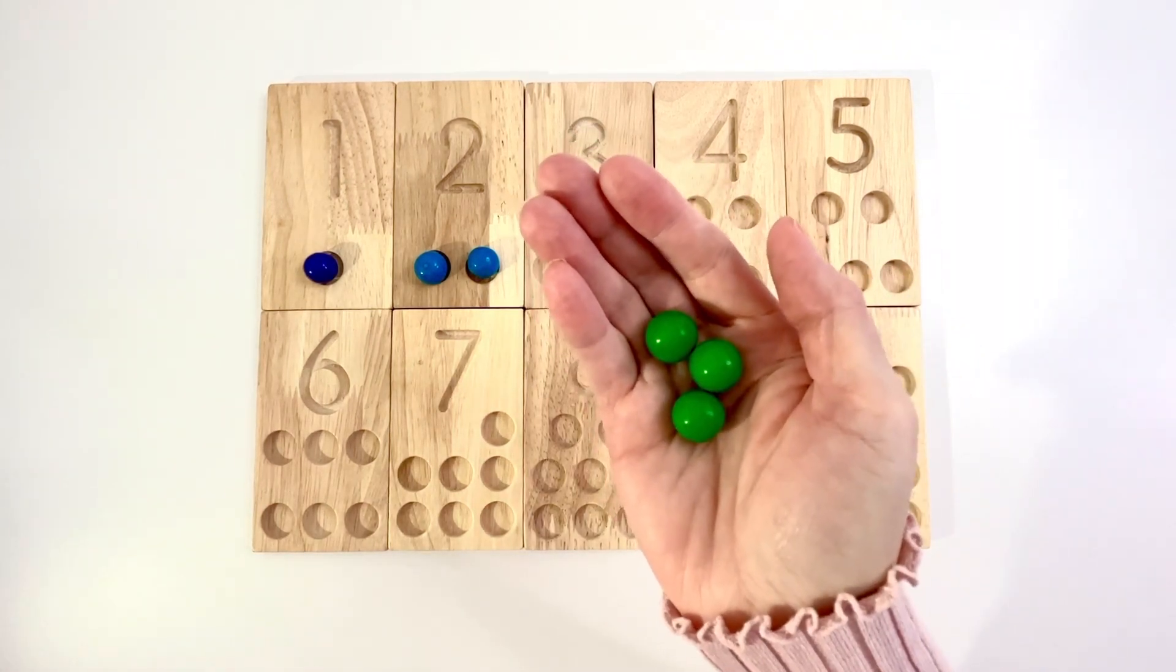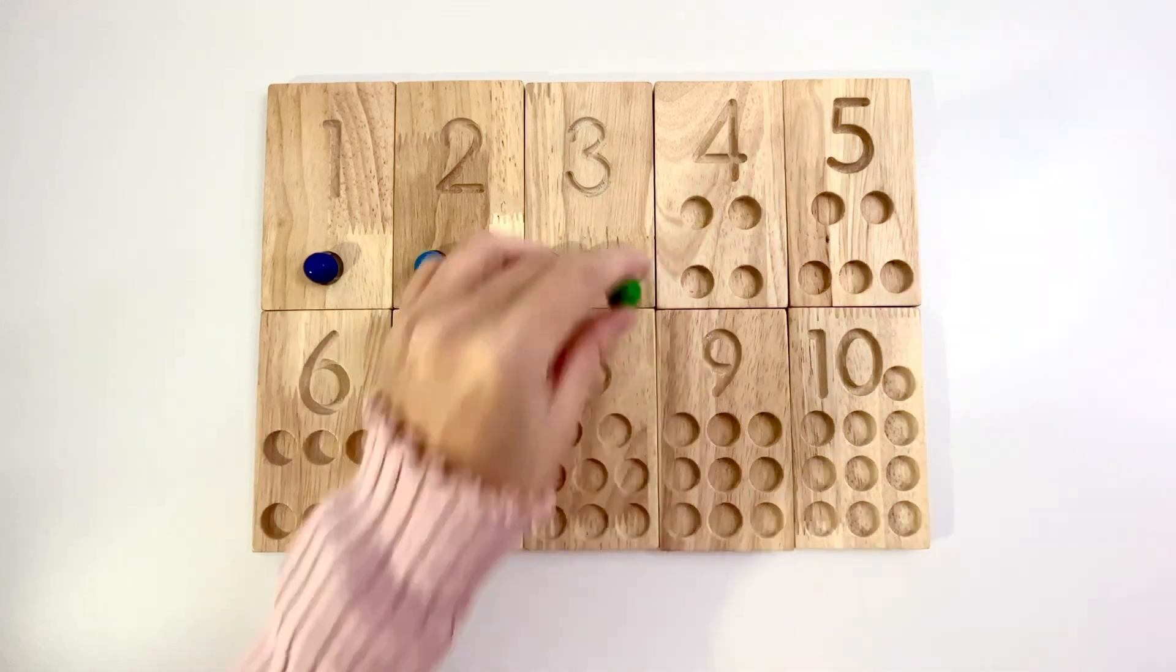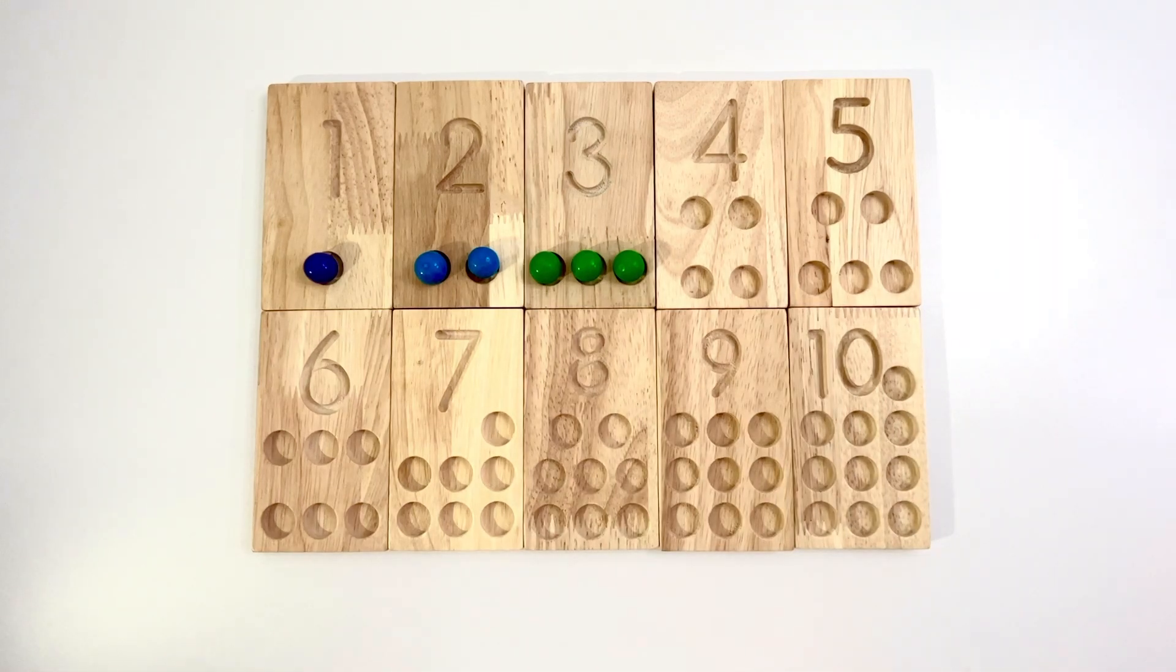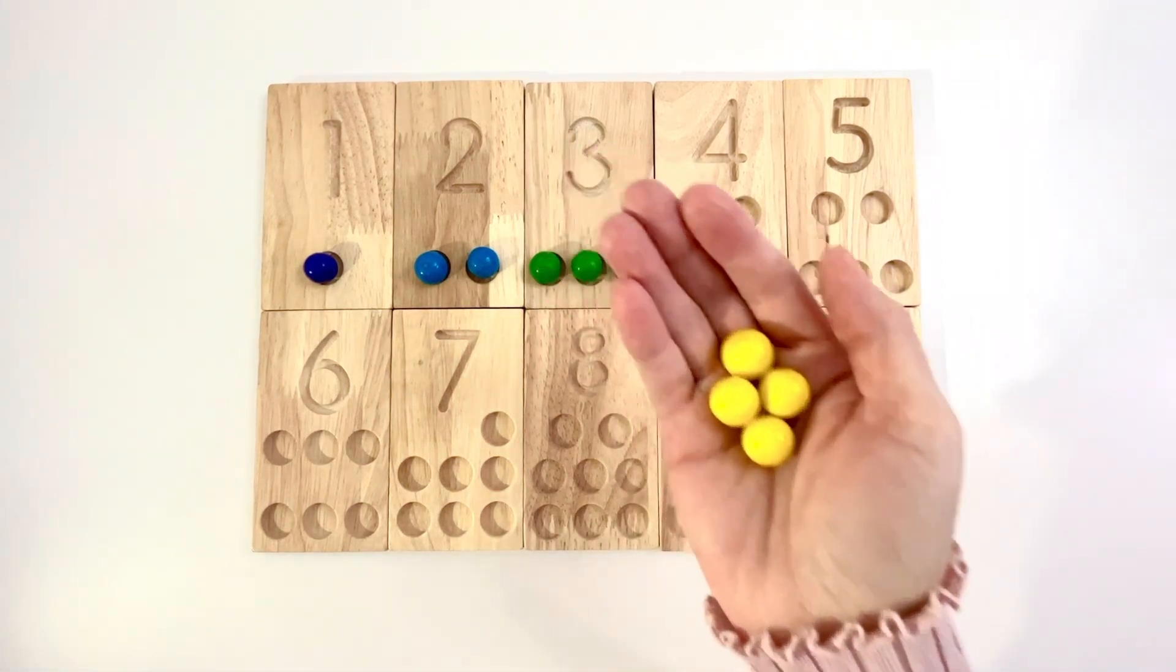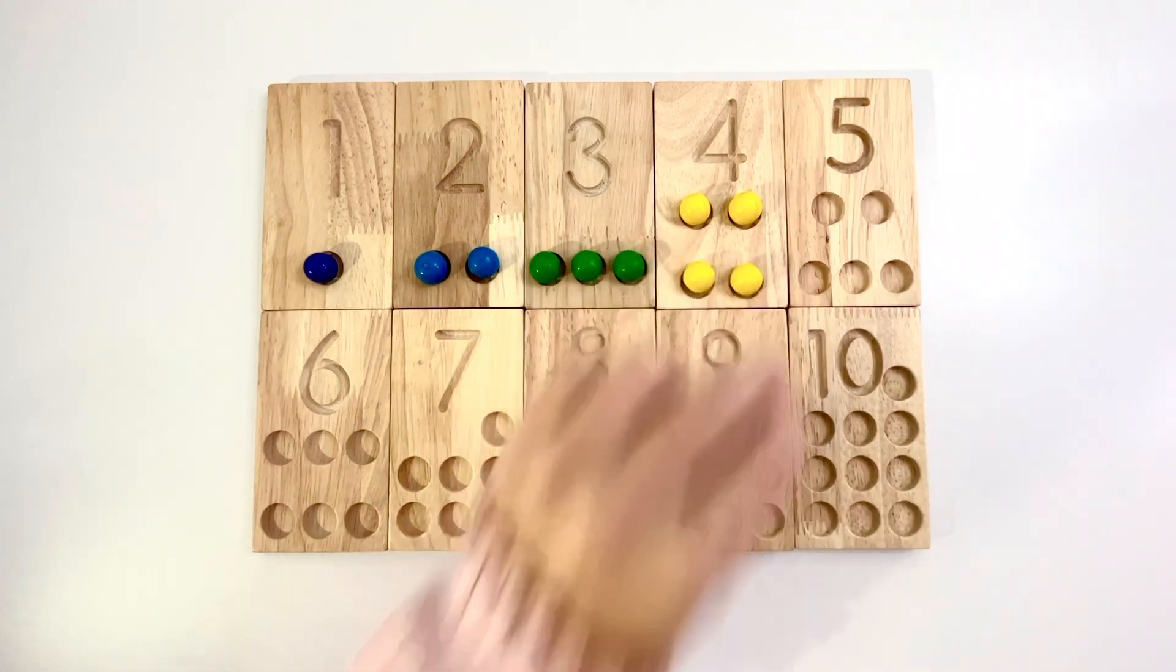Number three, three green candies. One, two, three. Number four, four yellow candies. One, two, three, four.